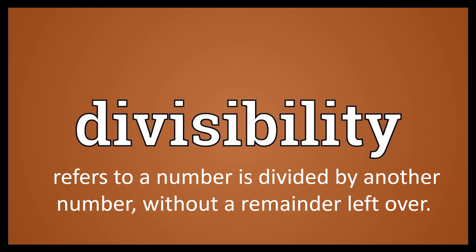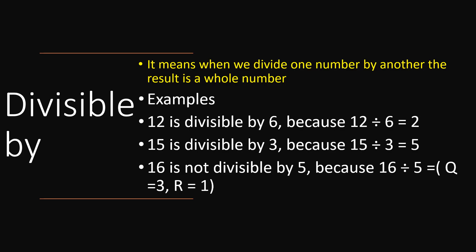Divisibility refers to a number being divided by another number without a remainder left over. Divisible by means that when we divide one number by another, the result is a whole number. For example, 12 is divisible by 6 because 12 divided by 6 equals 2 — no remainder.